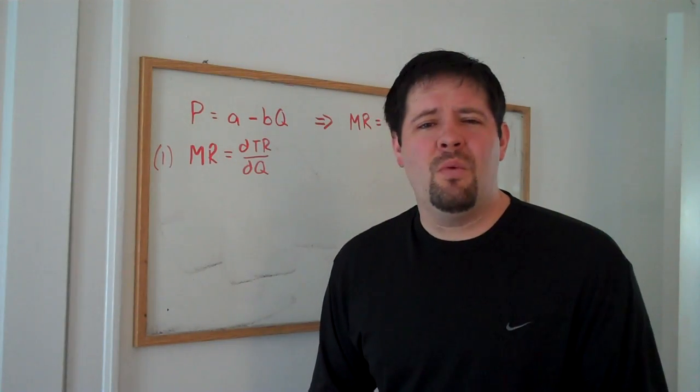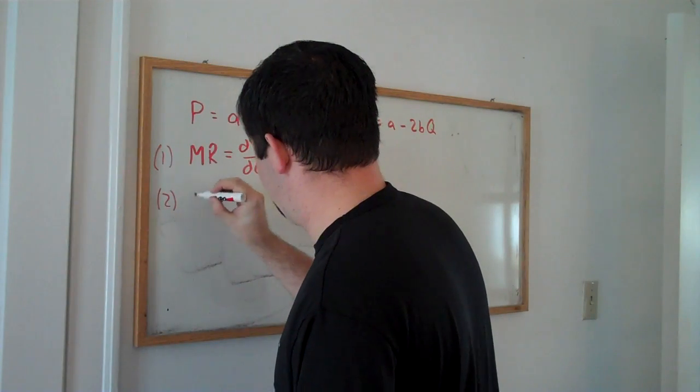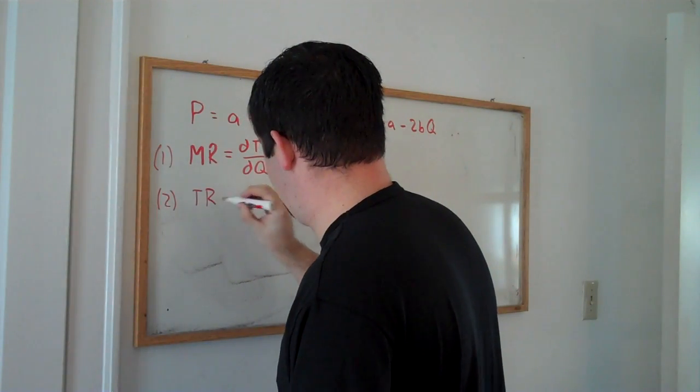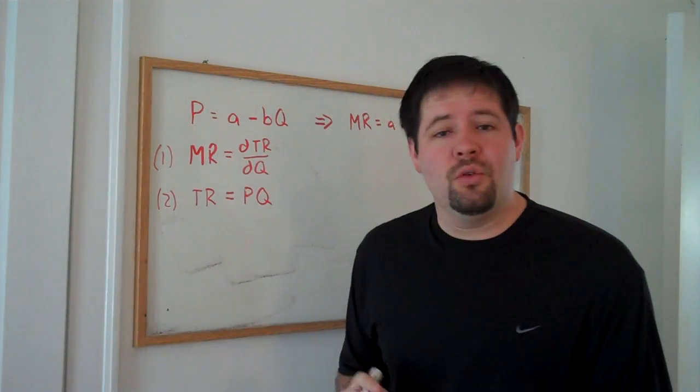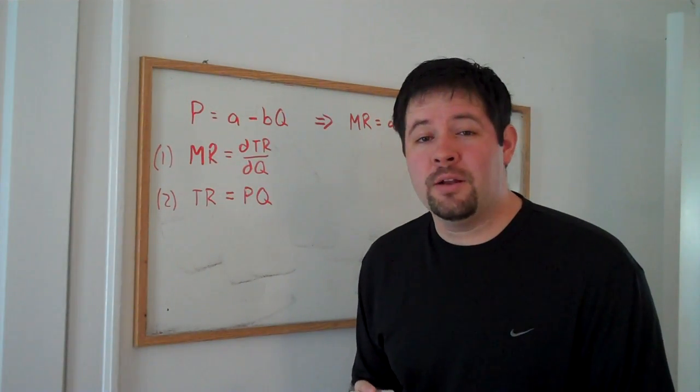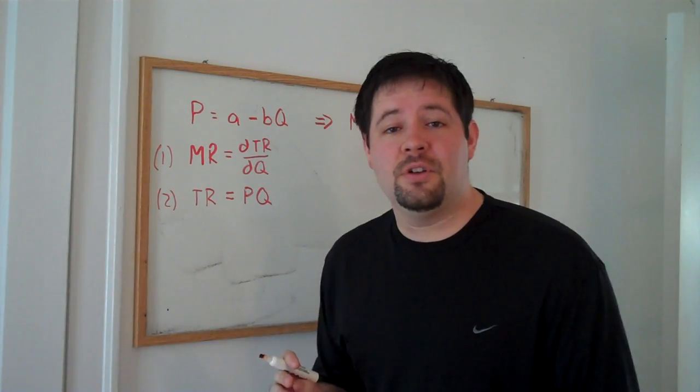The second thing we want to think about is, well, what is total revenue? Total revenue is just price times quantity, but for a monopolist, the price is the inverse demand curve.